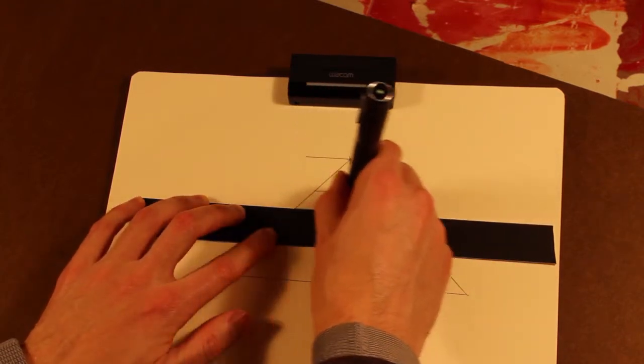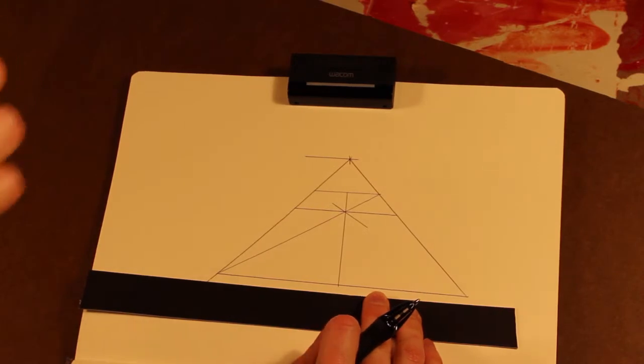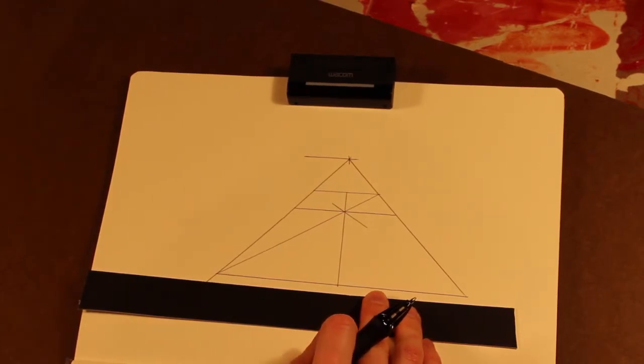And the matter of drawing a grid is just subdividing each plane. Now we've got four planes so we're just going to subdivide. It's pretty easy.